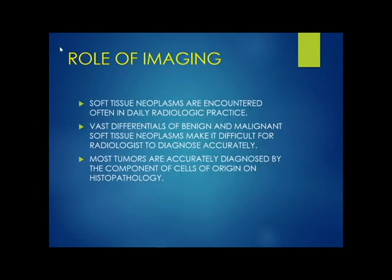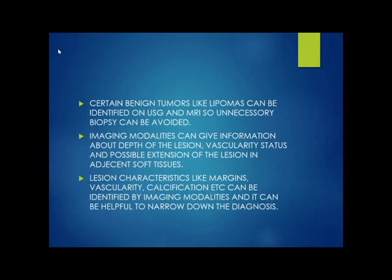The role of imaging in soft tissue tumors. Soft tissue neoplasms are encountered often in daily radiologic practice. Vast differentials of benign and malignant soft tissue neoplasm make it difficult for radiologists to diagnose accurately. Most tumors are accurately diagnosed by the component of cells of origin on histopathology. Certain benign tumors like lipomas and gangliomas can be identified on ultrasound and MRI, so unnecessary biopsy can be avoided. Imaging modalities can give information about depth of the lesion, vascularity status, possible extension into adjacent soft tissues, margins, and calcification — helping to narrow down the diagnosis.